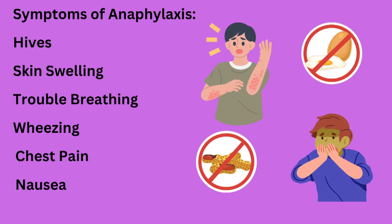Anaphylaxis is when you have two systems in your body reacting at the same time. One system can be the skin — with hives or swelling — but also can be your GI tract, having gastrointestinal symptoms like vomiting or abdominal pain. So you have skin plus GI symptoms — that's anaphylaxis. Or you have skin symptoms plus respiratory symptoms after ingesting a food — that's also called anaphylaxis.